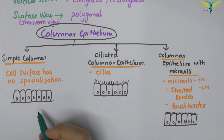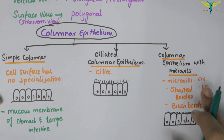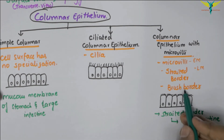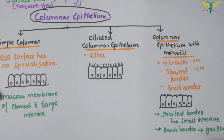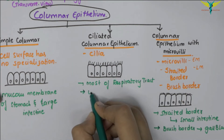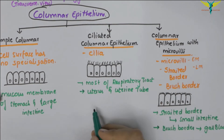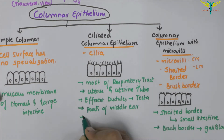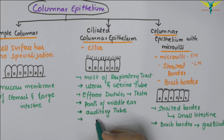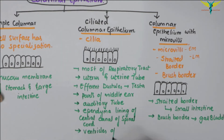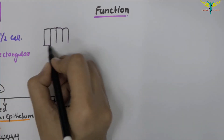Now let's talk about the location of the columnar epithelium. The simple columnar epithelium is located over the mucous membrane of the stomach and the large intestine. The columnar epithelium with the striated border is mainly seen in the small intestine. The ciliated columnar epithelium lines most of the respiratory tract, the uterus, and the uterine tube. It is also seen in the efferent ductules of the testis, parts of the middle ear, and the auditory tube.